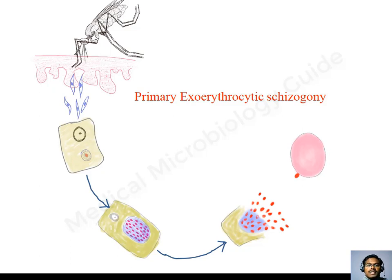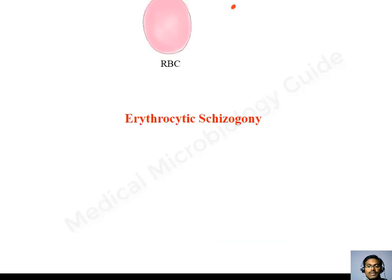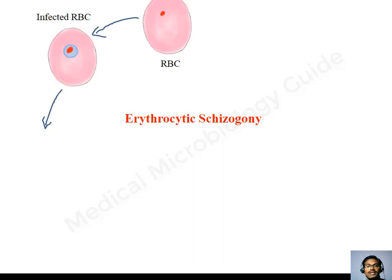It is called primary because that is the first time the person is getting infected. Exoerythrocytic because this is taking place outside the RBC. The merozoites released from the hepatocytes will go and attach to the RBCs. The xylo proteins and glycophorins present on the RBC cell membrane attach the merozoites, and they get internalized into the cytoplasm of the RBCs. In the RBC, these merozoites will get converted into the ring stage, which is the early trophozoite form.